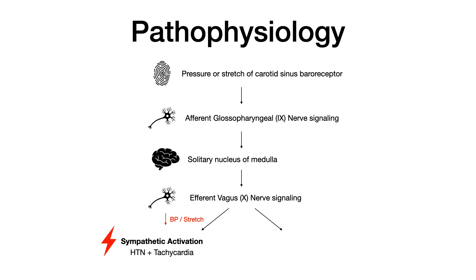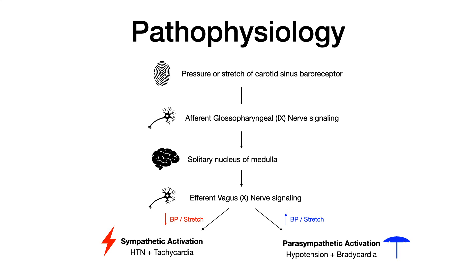Alternatively, if the receptors were sensing too much stretch — meaning blood pressure was too high, so that carotid sinus was stretching out and pressure was being applied to it — then you would want to tamp down at the heart, lower cardiac output, and activate the parasympathetic nervous system. And then you would see hypotension and bradycardia.